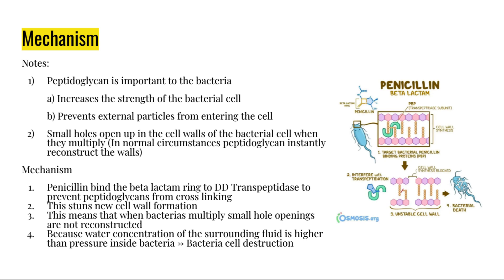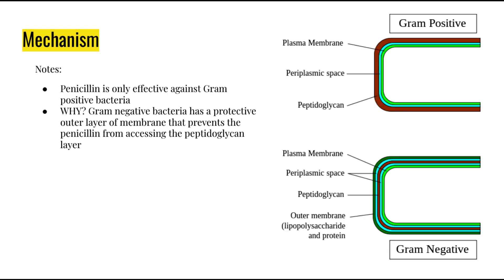Because the water concentration of the surrounding fluid will be higher than the pressure inside the bacteria, external particles and water will rush into the cell, bursting it and leading to its destruction. We do have to note that penicillin is only effective against gram-positive bacteria. This is because gram-negative bacteria have a protective membrane layer that prevents penicillin from accessing the peptidoglycan layer.